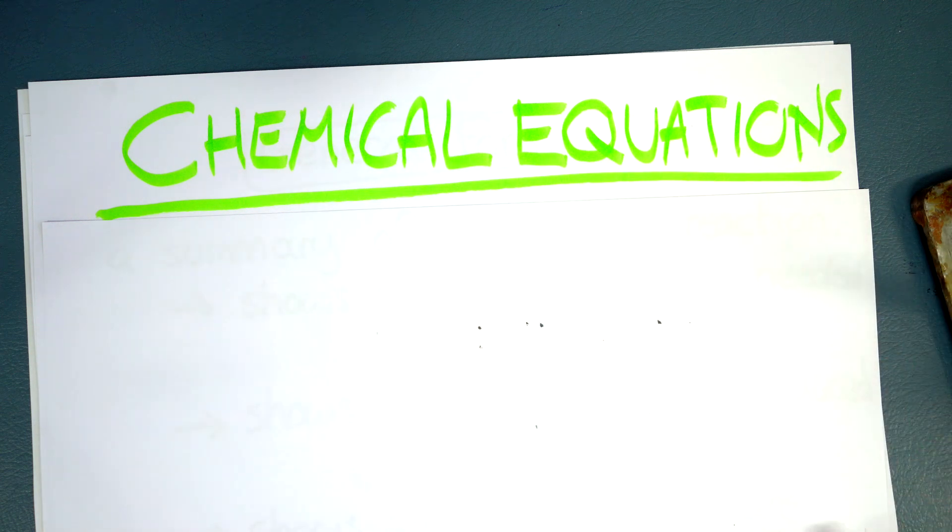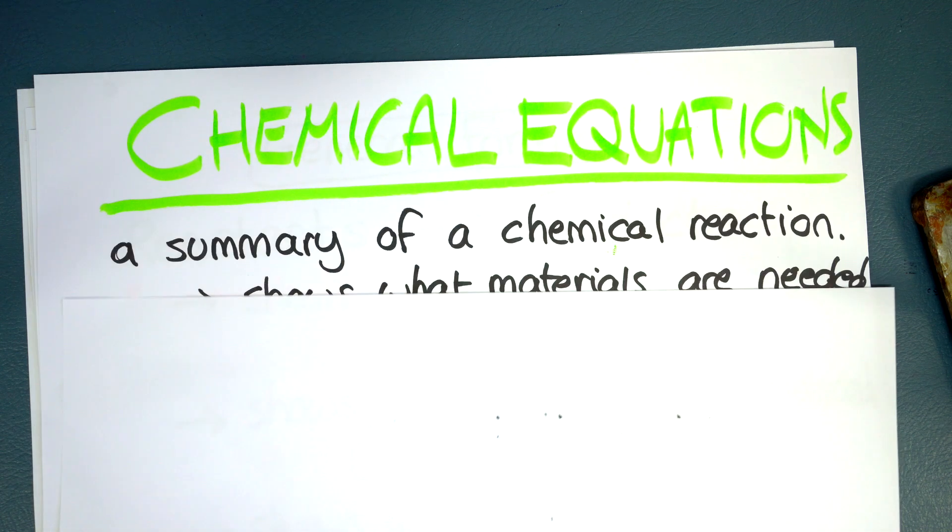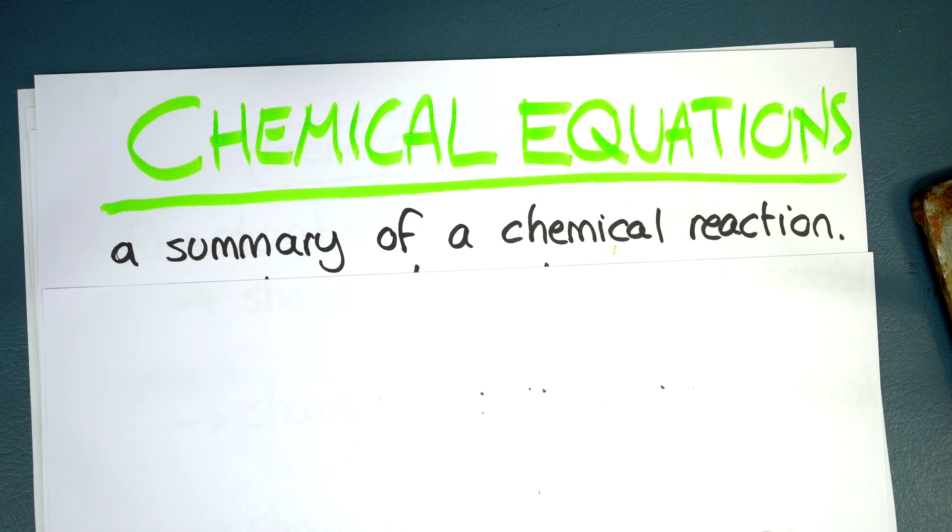Now these actually look very different from the equations you may be hearing about from mathematical equations, so you need to sort of set that aside and think that in chemistry we're probably talking about something different. So what is a chemical equation? It is basically a summary of a chemical reaction.